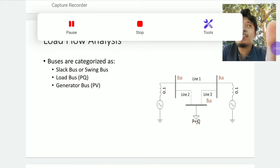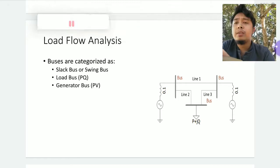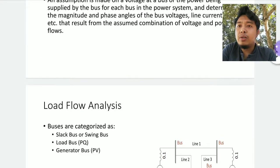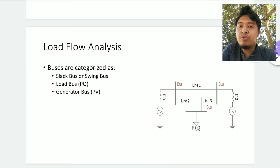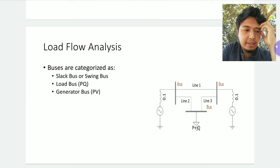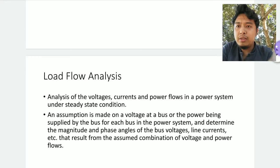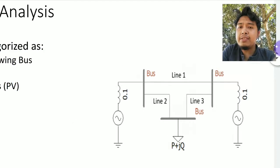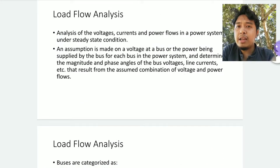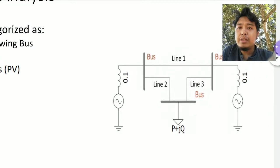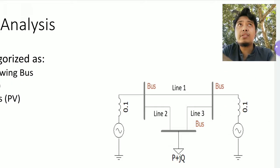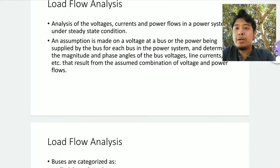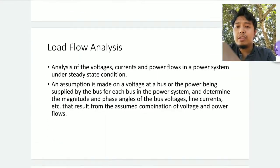Hi again. Shortly I'll be discussing the different types of buses in load flow analysis. In load flow analysis, you will be dealing with per unit values for the impedances, the admittances, per unit values for the voltages, the currents, and the power. So all of them are in per unit values.